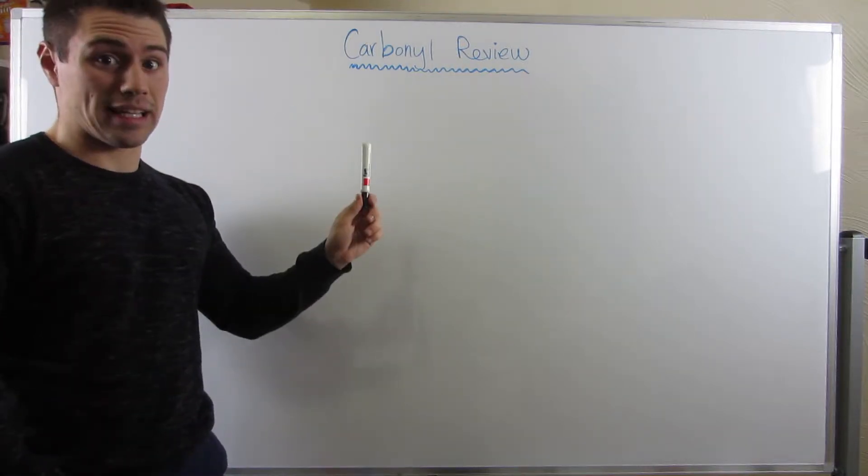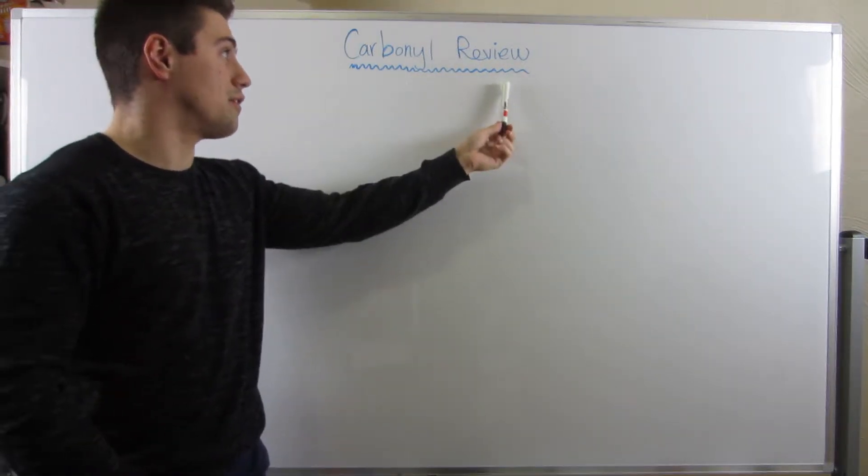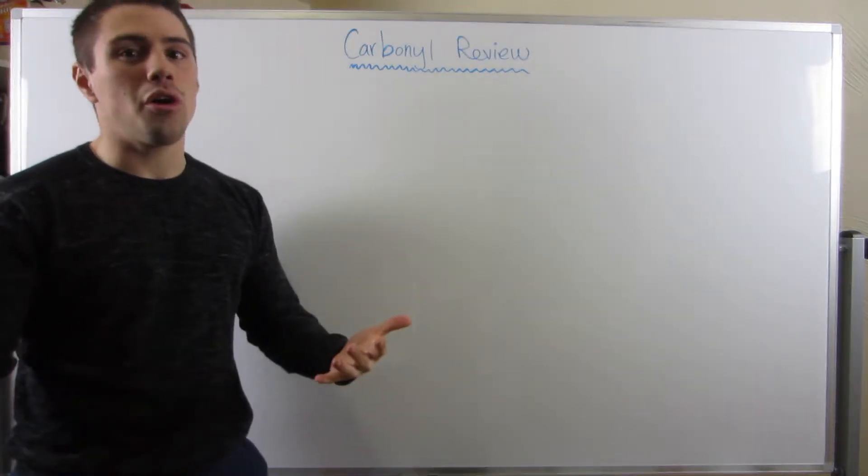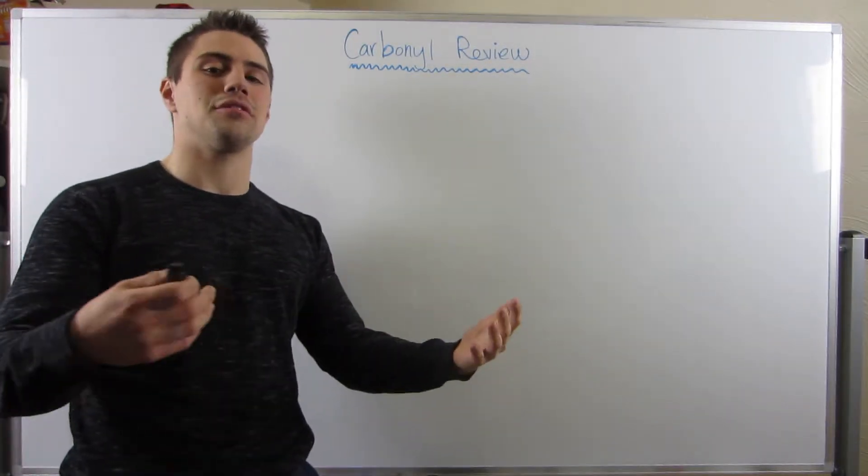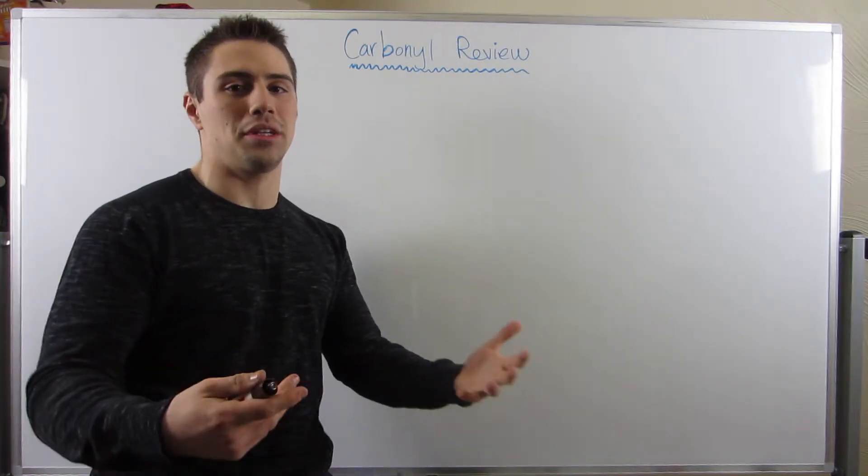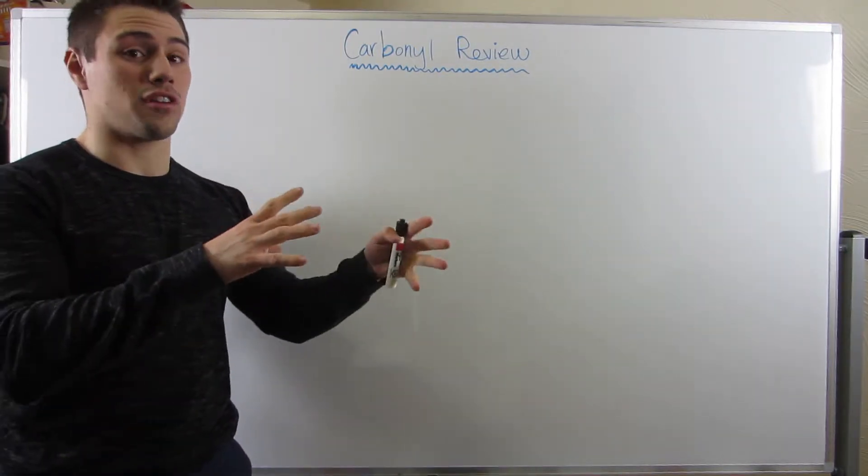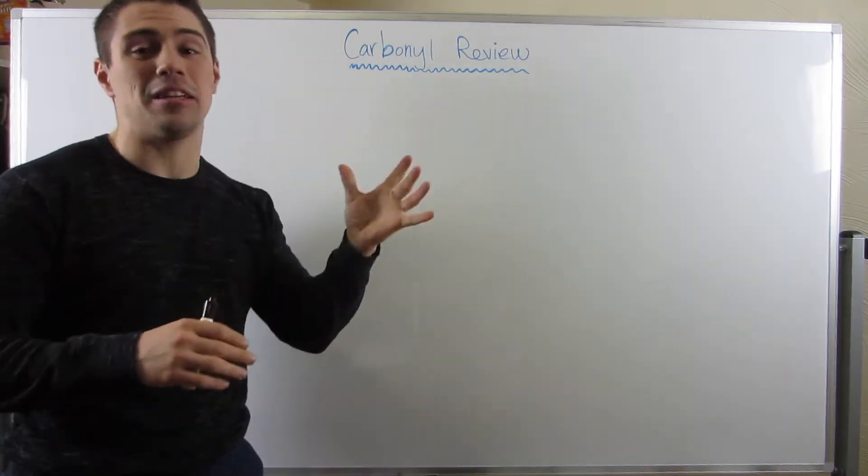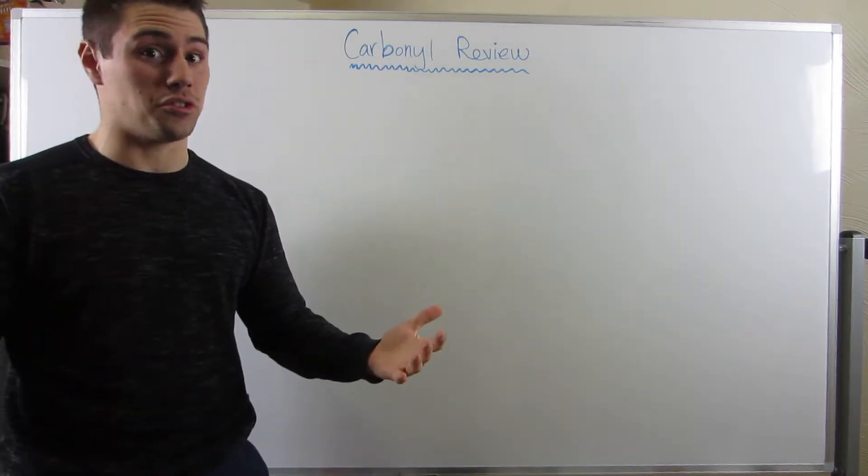We finally made it to the part of Organic Chemistry 2 where we're going to go back to carbonyl chemistry. So I know what you're thinking, Joe, we already did the Grignard reaction and other stuff. Why are we doing carbonyls again? Well, once we did that Grignard stuff back in OCHEM 1, that was just a tiny little sneak peek into all of the chemistry you could do with carbonyls.